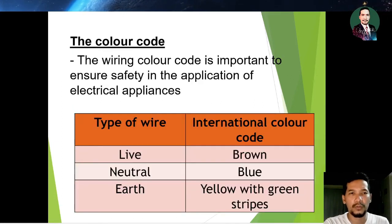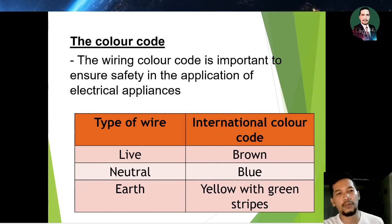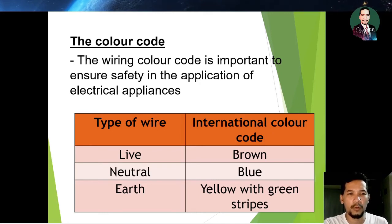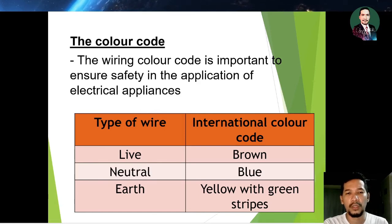The color code for electrical wiring is very important to ensure the safety of electrical appliances. The live wire is brown, the neutral wire is blue, and the earth wire is yellow and green striped.